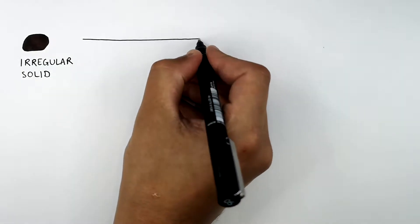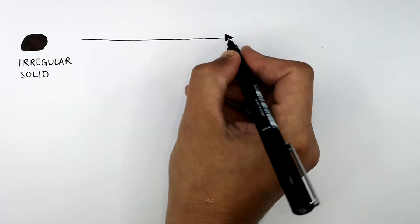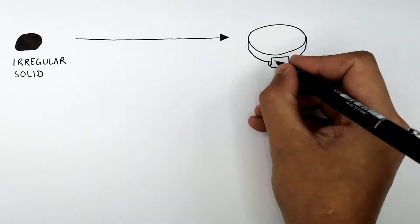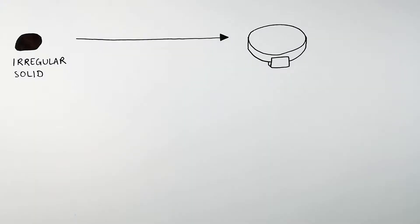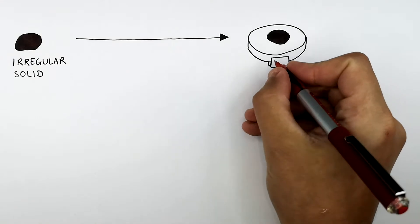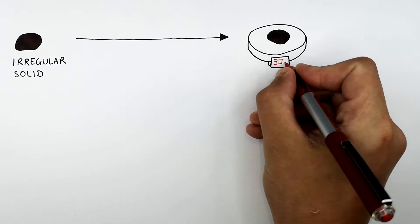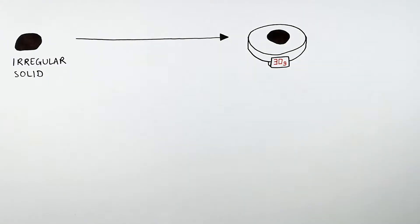To work out the mass of this irregular shaped solid, you must put the solid onto a balance. So the mass of this solid is 30 grams or 0.03 kilograms. So we use the balance to measure the mass of this irregular shaped solid.